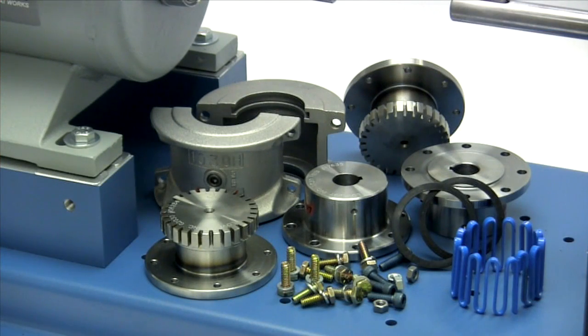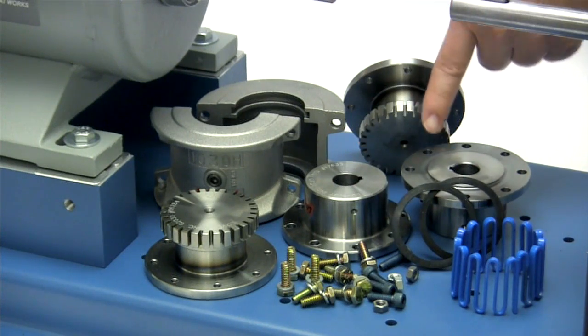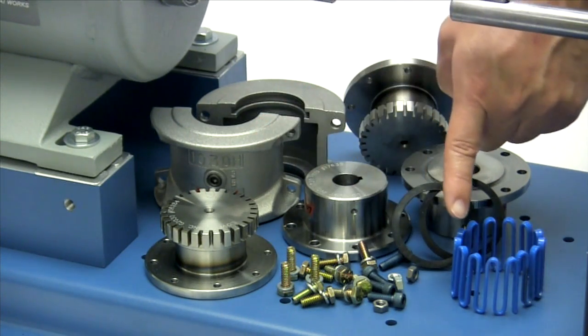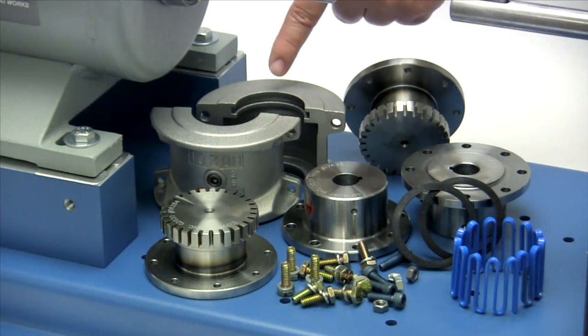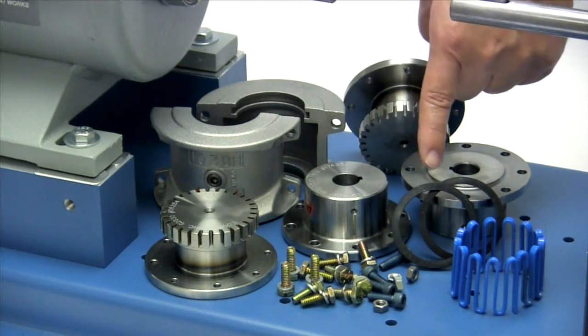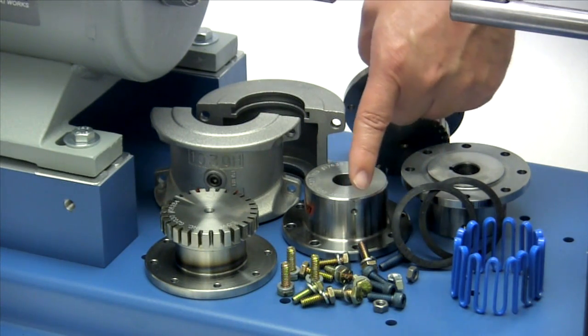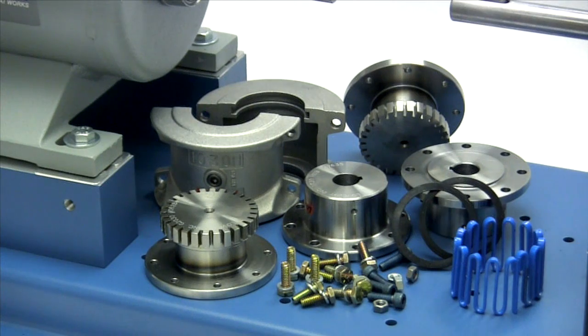The following components are provided with the purchase of your Lovejoy grid full spacer coupling with horizontal split cover. You should have two shaft hubs, two spacer grid hubs, one grid spring, two cover halves, two seals, and hardware for both the split cover and the shaft hubs.